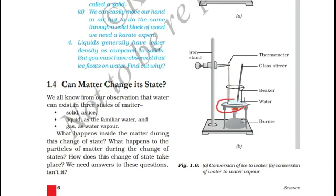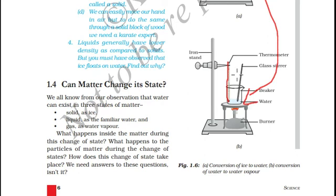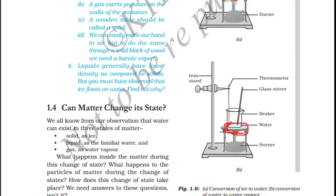When ice starts to melt, take note of at what temperature the ice melts. Once the ice is converted into liquid, place a glass rod into the beaker, then increase the temperature of the burner and stir the water continuously with the help of the stirrer. Note the temperature when water starts to boil.